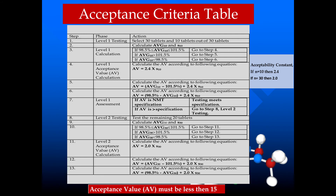Now let's talk about Level 1 testing. We have to perform the individual assay of 10 tablets and find the average assay of those 10 tablets. We also have to calculate the standard deviation of these 10 assays. If the average content of the 10 tablets is between 98.5% and 101.5%, we calculate the acceptance value by multiplying the standard deviation by 2.4. This 2.4 is the acceptability constant when the number of tablets is 10.